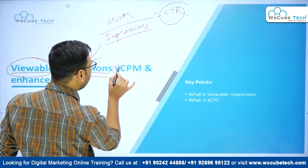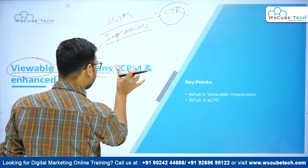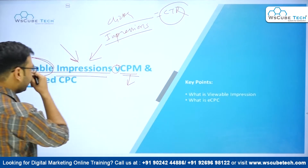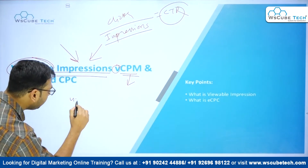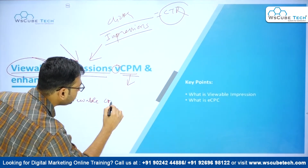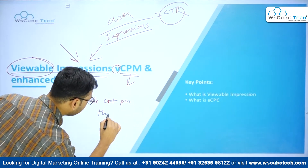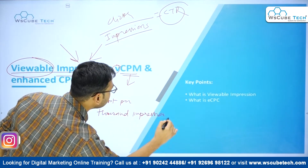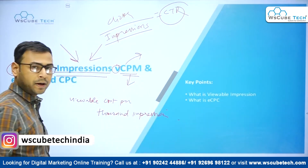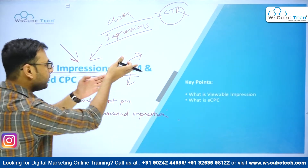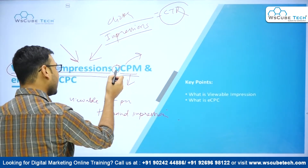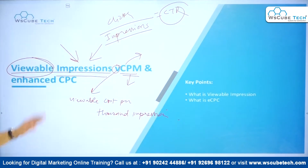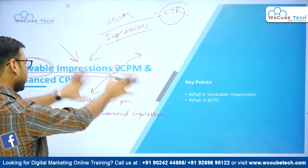Whenever you see a small 'v' in front of CPM — which stands for cost per thousand impressions — it means viewable cost per thousand impressions. So when you see CPM it is cost per thousand impressions, and when you see vCPM it is viewable cost per thousand impressions. We will talk about the term 'viewable' itself and how it is different from normal impressions.